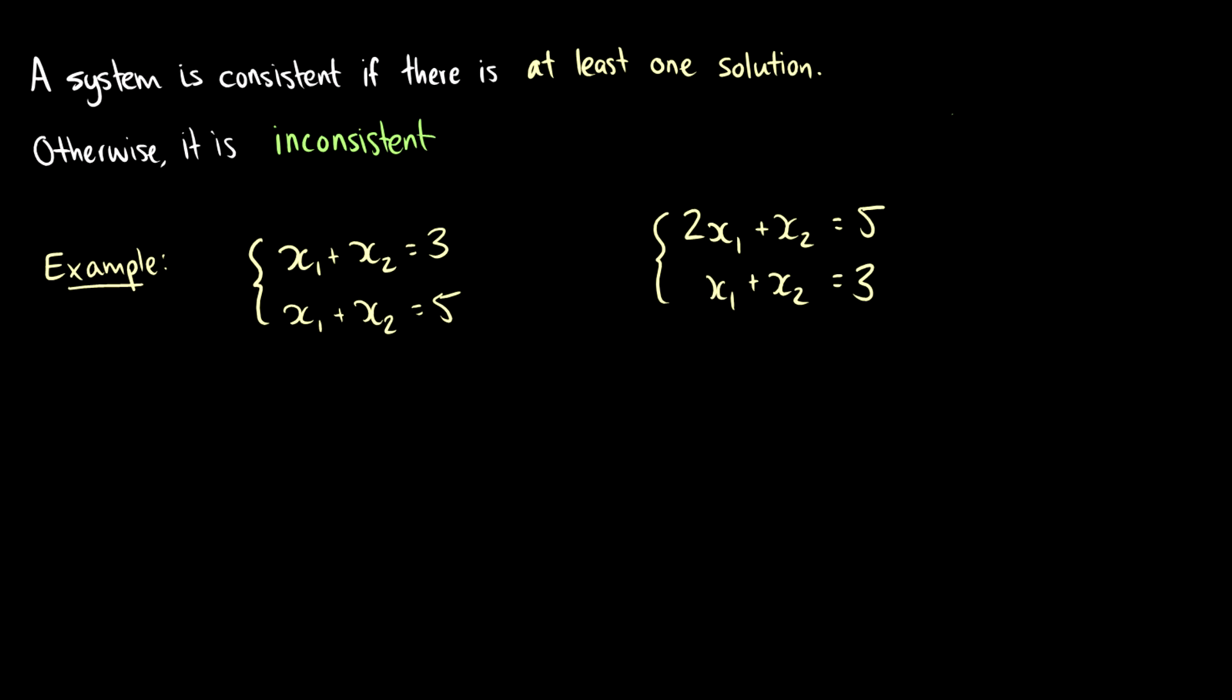So in the first example here, we have x1 plus x2 is equal to 3, but x1 plus x2 is equal to 5. Well, this is weird because we're saying, in x1 plus x2 is equal to 3, if we take the sum of the two points, then we have a line that looks like this. So that's our x1 plus x2 is equal to 3.